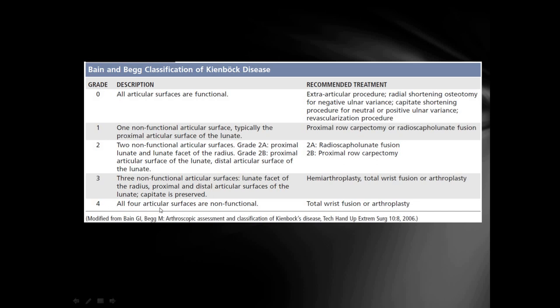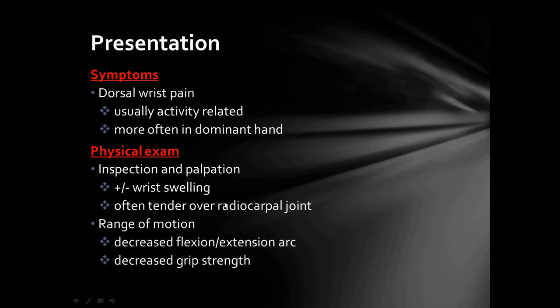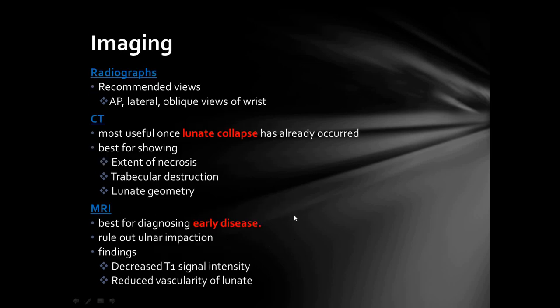The clinical presentation of Kienböck's disease: patients usually complain of dorsal wrist pain which is activity related, more often in the dominant hand. On physical examination there will be wrist swelling, tenderness over the radiocarpal joint, decreased range of motion of the wrist, and decreased grip strength.